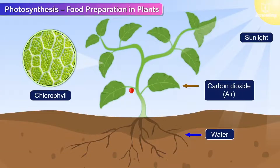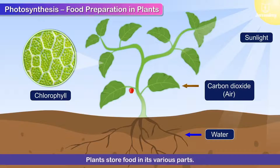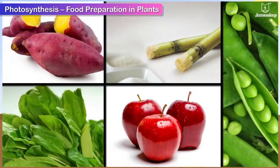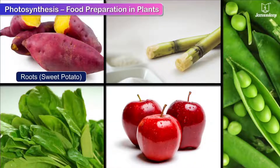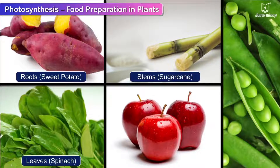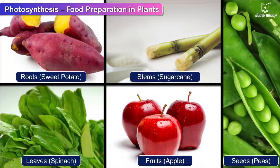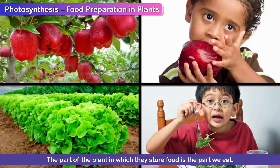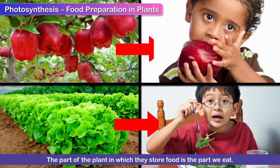Plants prepare food through photosynthesis and store it in various parts: roots, stems and leaves. This food provides them energy to grow. The part of the plant in which they store this food is the part we eat.